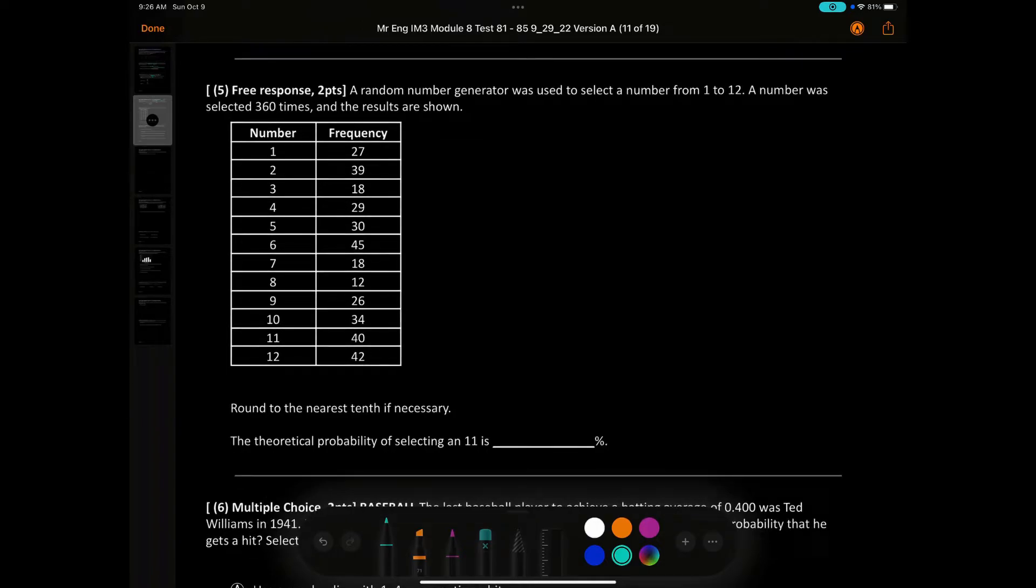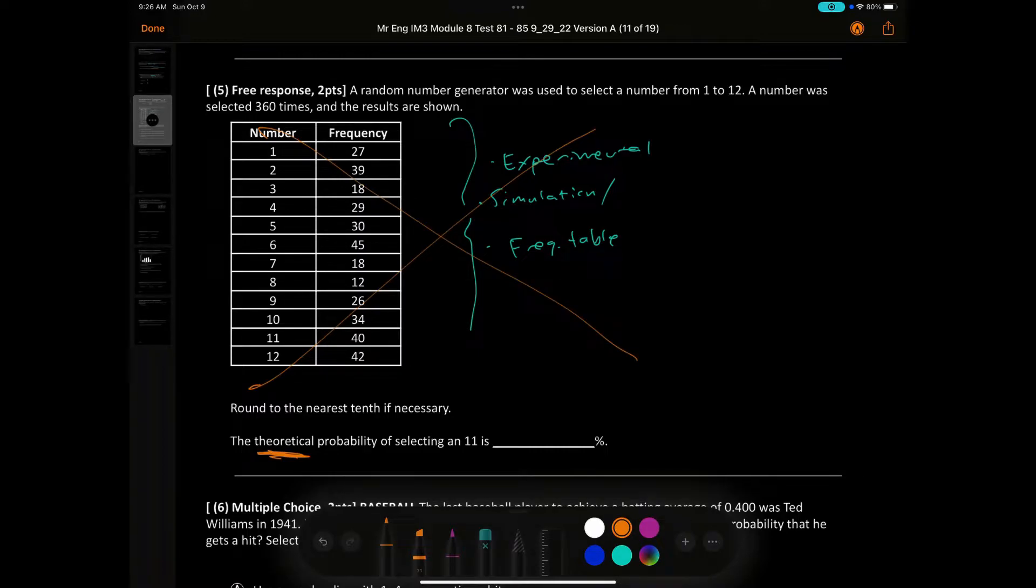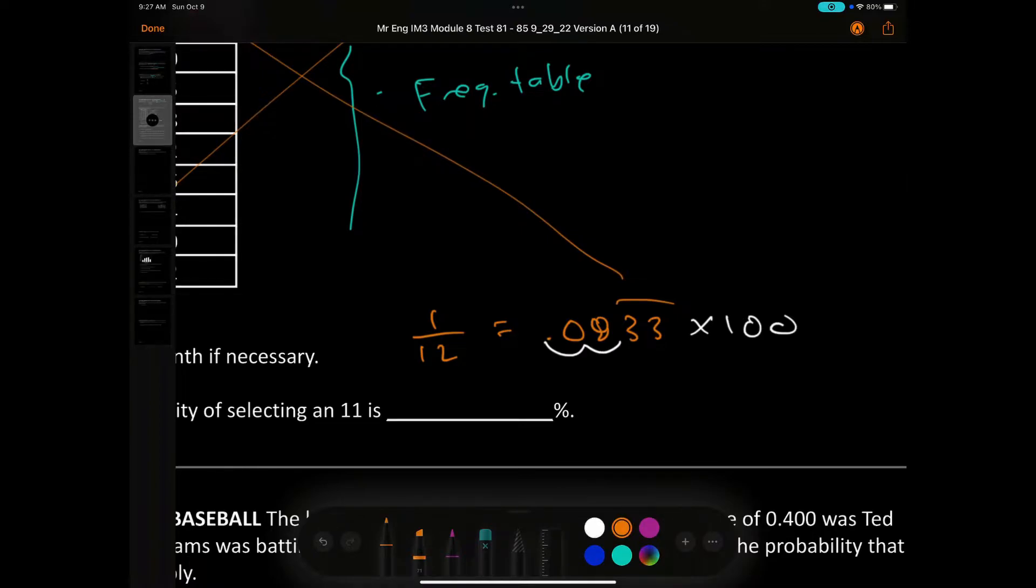Number 5. A random number generator was used to select a number from 1 to 12. A number was selected 360 times and the results were shown. So this is my simulation, also called a frequency table, showing how it happened. This is the experimental because this actually happened. The theoretical probability of an 11 - what happens in theory? You wouldn't need any of this. The theoretical probability is there's 12 numbers and it's 1 out of 12. If I put that into my calculator, I get 0.083 repeating. If you multiply this by 100, move it two decimal places, you're going to get an answer of 8.33%.